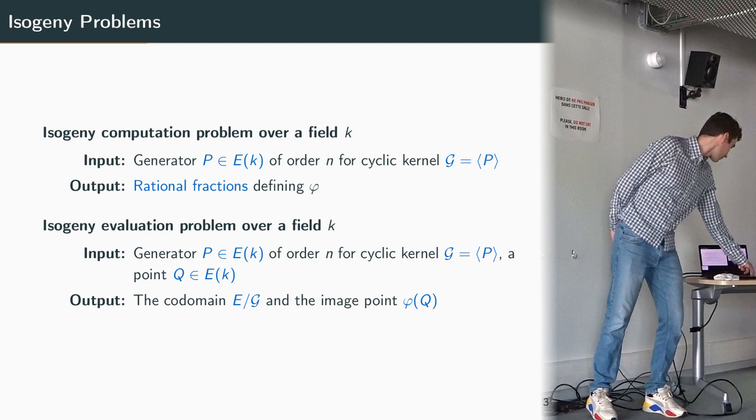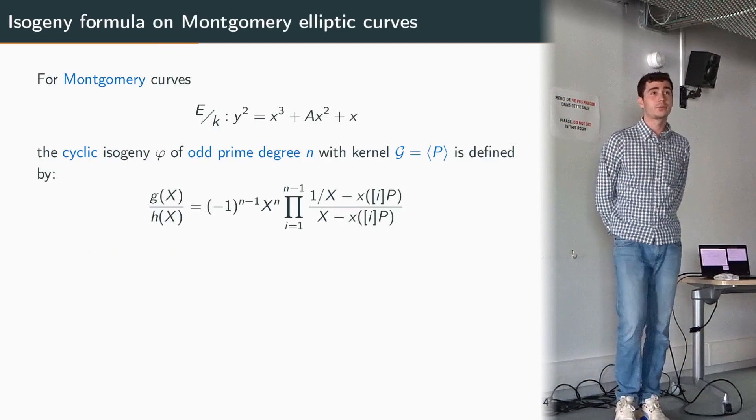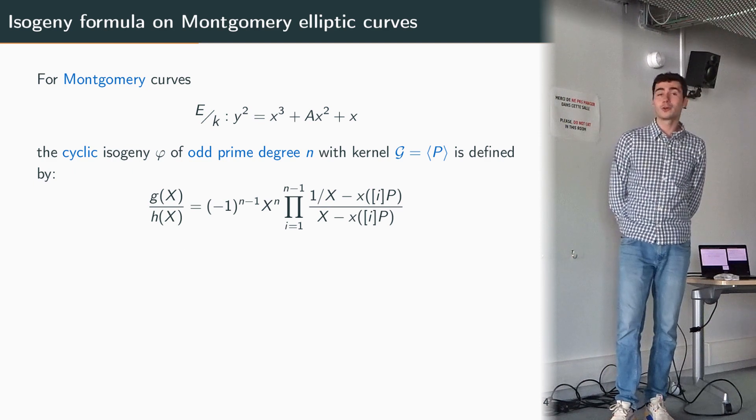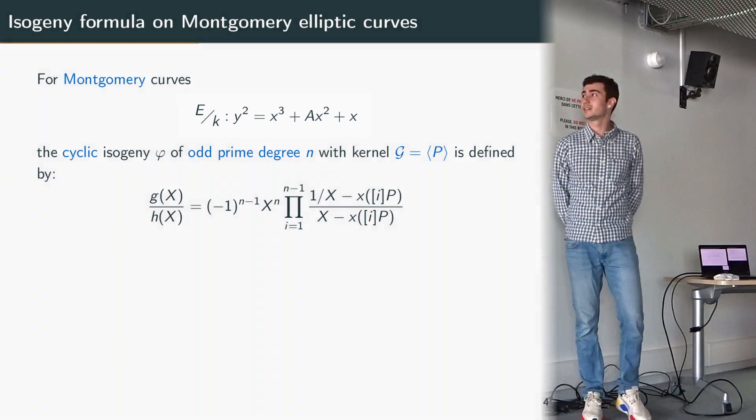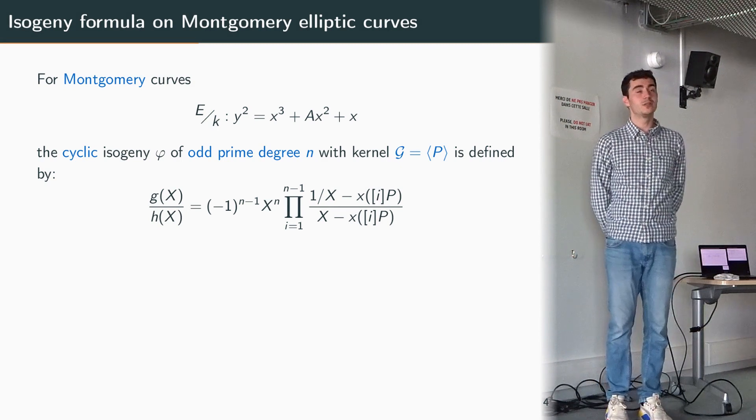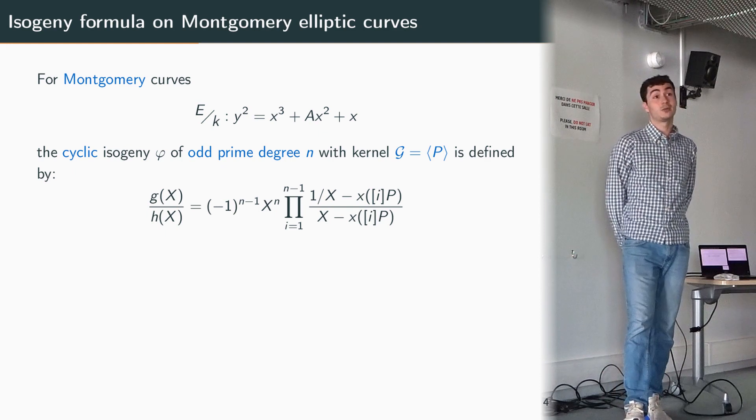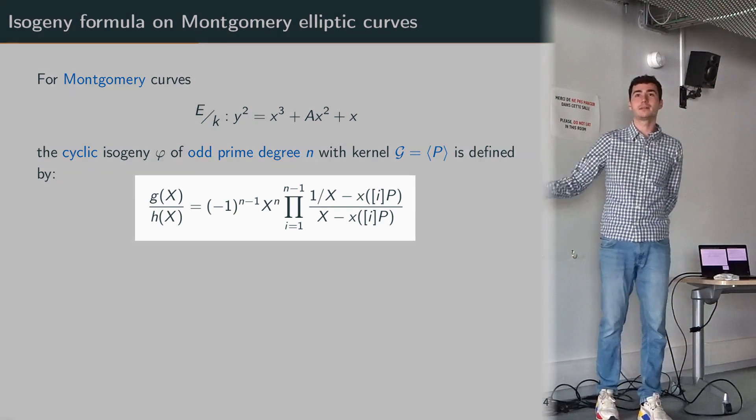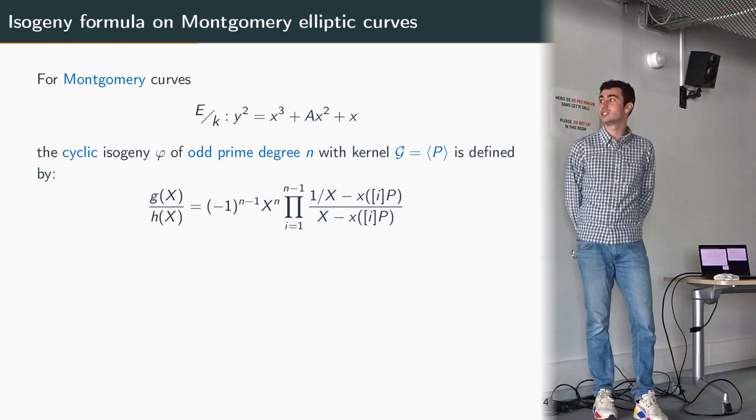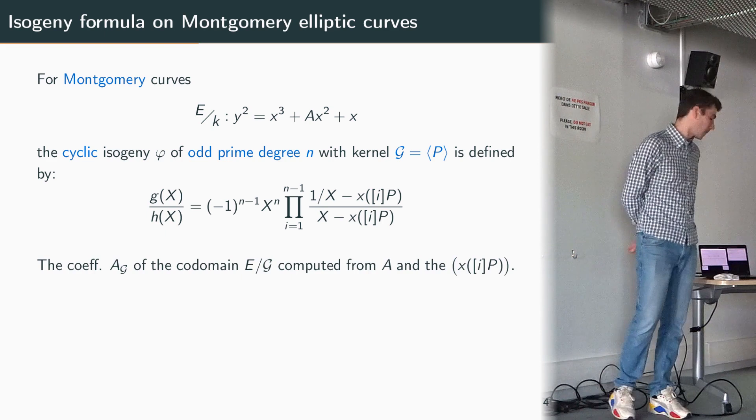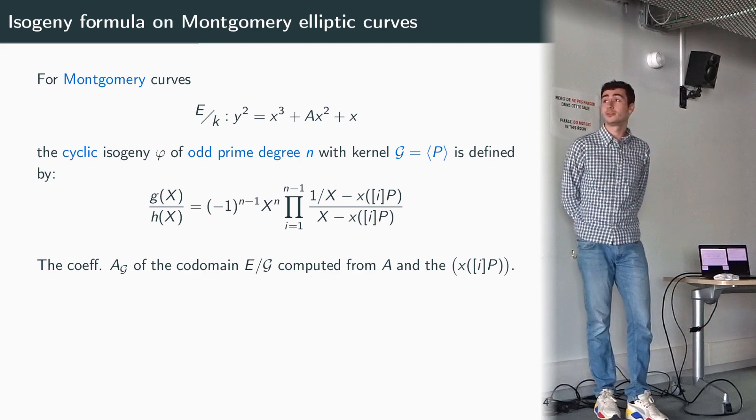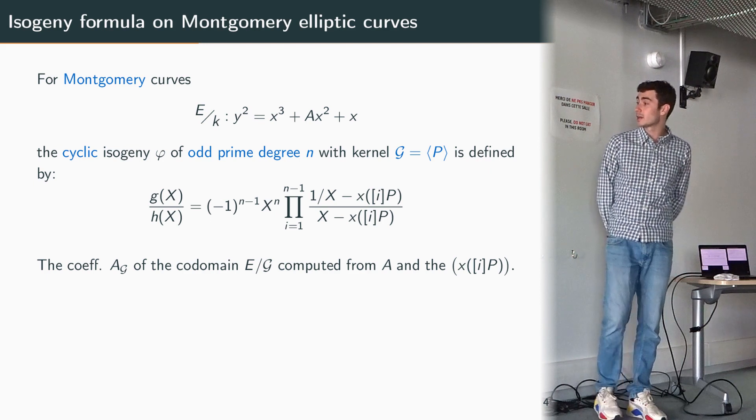So maybe a concrete example with Montgomery elliptic curves, which is a model of curve that is often used in cryptography. So a Montgomery curve is defined by this equation here which depends on some coefficient a, and then we can compute the cyclic isogeny of odd prime degree n with kernel generated by some point P using this rational fraction here. We can compute the coefficient of the co-domain E mod G from the knowledge of the coefficient a and the x-coordinate of the scalar multiple of P.